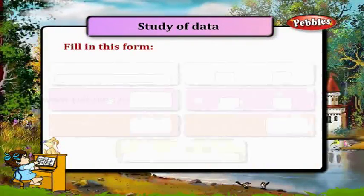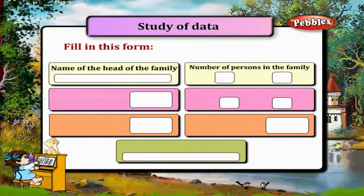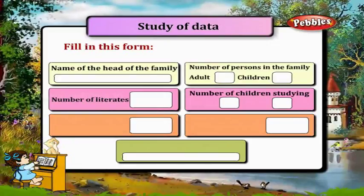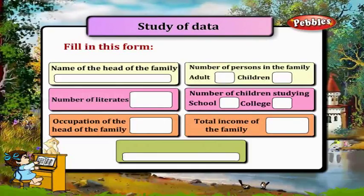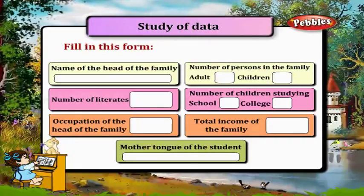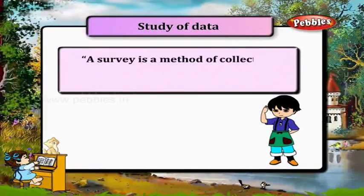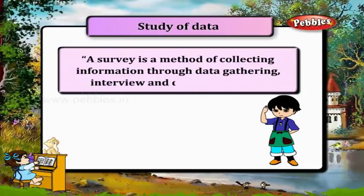Fill in this form. Name of the head of the family. Number of persons in the family — adults, children. Number of literates. Number of children studying in school or college. Occupation of the head of the family. Total income of the family. Mother tongue of the student. A survey is a method of collecting information through data gathering, interview, and questionnaire.